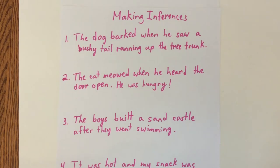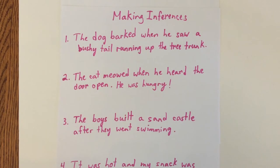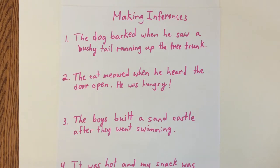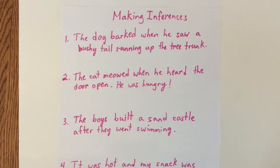The question is: what did the dog see? We're not going to just say the dog saw a bushy tail running up the tree trunk. It's describing something, and this is where we put on our detective hats and use the clues to help us figure it out. The bushy tail running up the tree trunk are some good clues. I'll give you a few seconds to think about what the dog barked at.